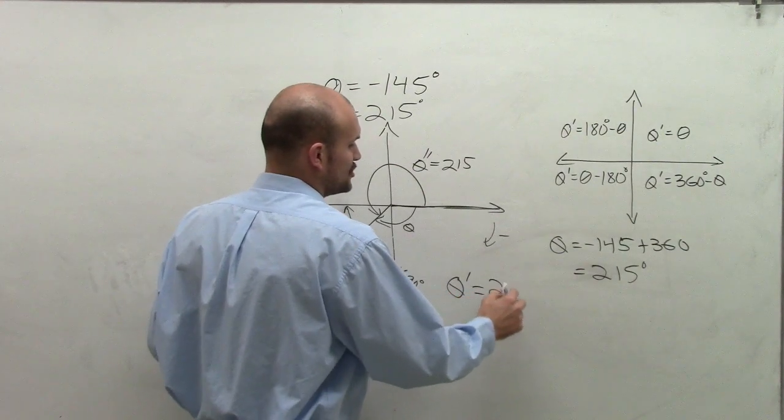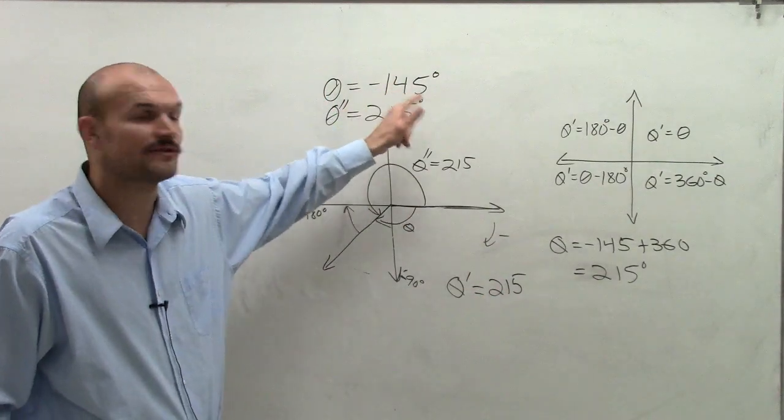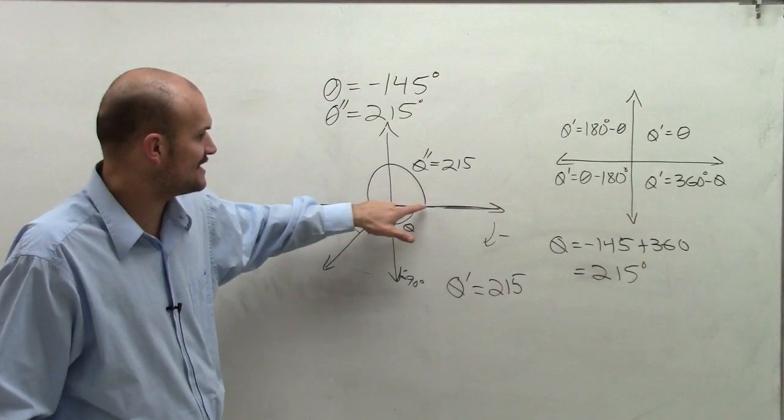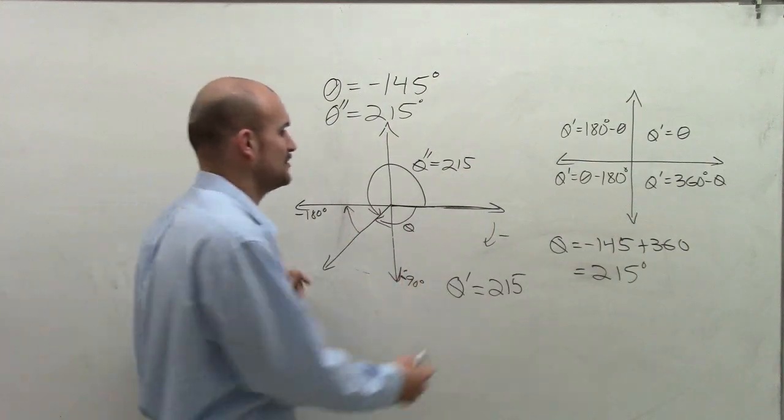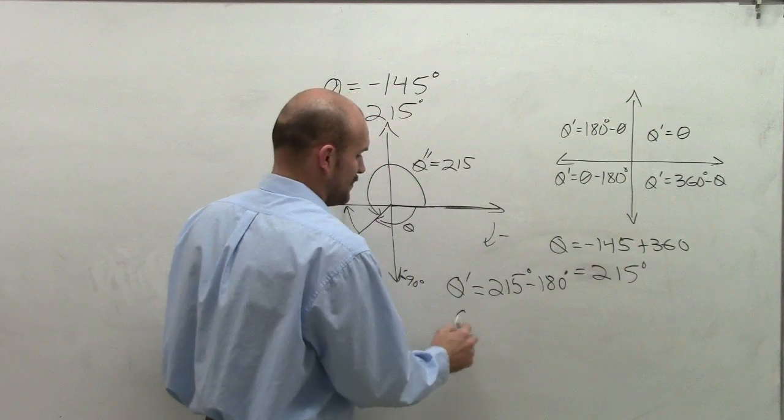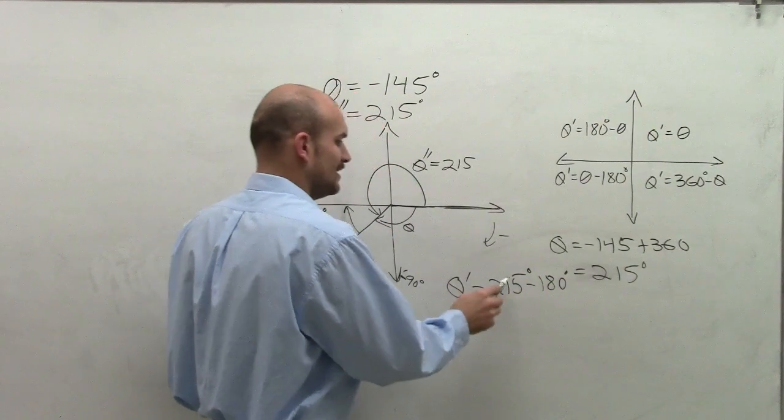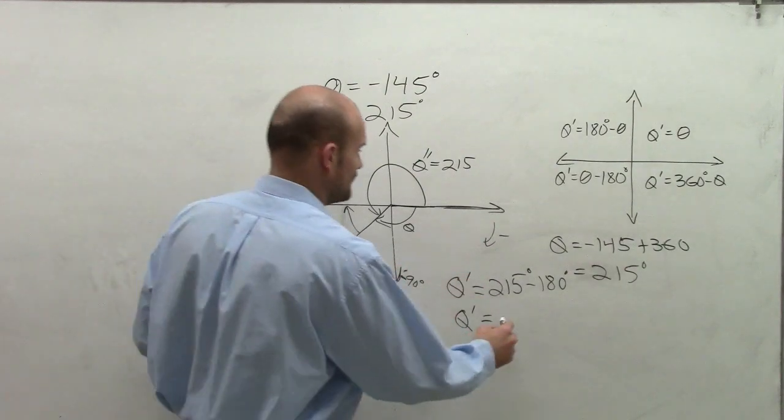theta prime equals 215. Now remember, 215 is equivalent to negative 145. They have the exact same initial and terminal side. That's why I can use that positive value of 215 degrees minus 180 degrees. Therefore, theta prime equals 35 degrees.